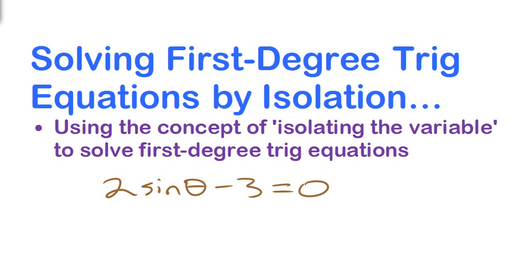In this case, we're going to think of the variable as the trig function. We're first going to try and isolate that, and then go from there to try and find values of theta — angles. All along here, what you need to think about is comparing it to all the equation solving you already know.